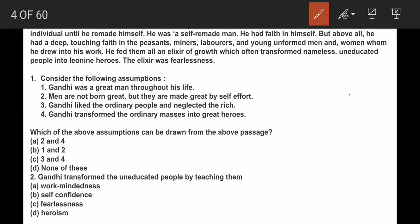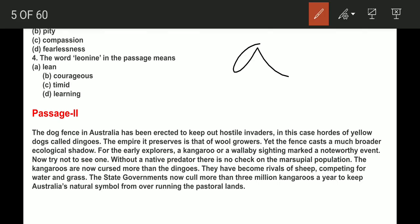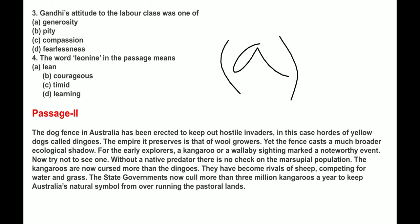Let's start with question number 1. Consider the following assumptions: Gandhi was a great man throughout his life; men are born great but they are made great by self-effort; Gandhi liked the ordinary people and neglected the rich; Gandhi transformed the ordinary masses into great heroes. Which statements are correct? The answer is first and second. Question 2: Gandhi transformed the uneducated people by teaching them what? The answer is fearlessness. Question 3: Gandhi's attitude to the labor class was one of generosity. Question 4: The word leonine in the passage means courageous.